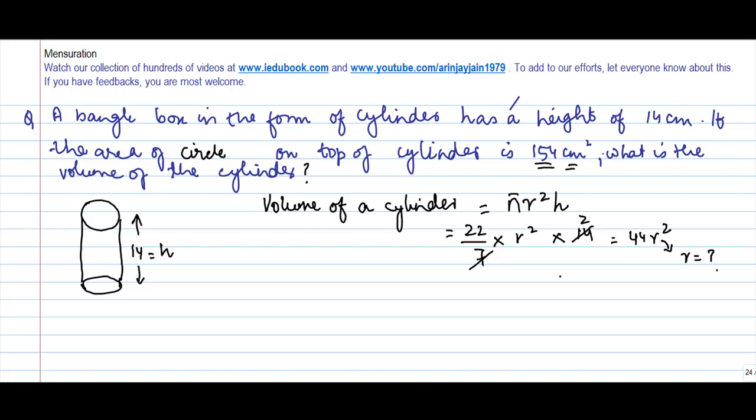I do not know what is the value of r, and r is the radius of this circle which is on the top of the cylinder. However, what we are given is that the area of this circle on the top of the cylinder is 154 centimeters squared.